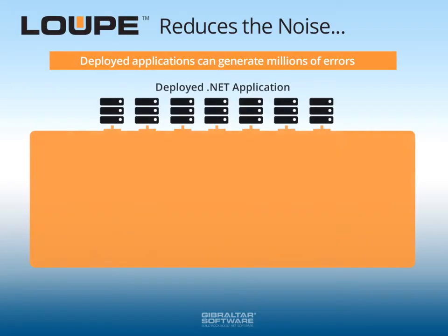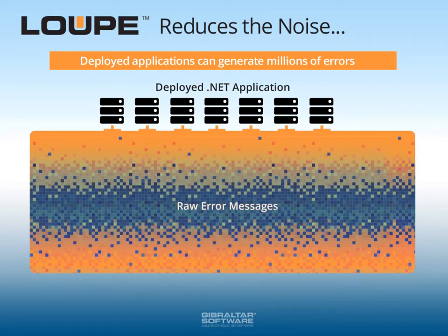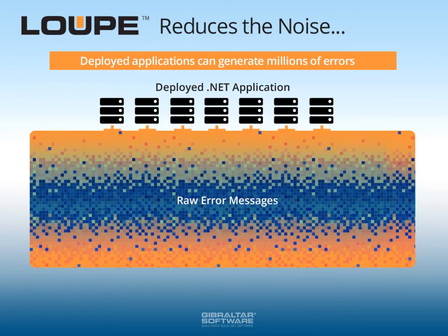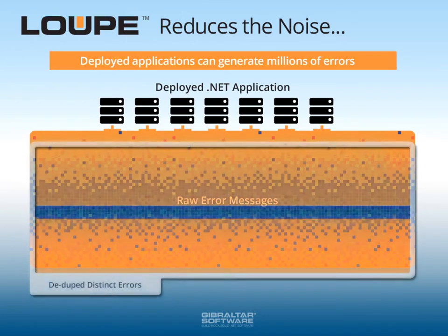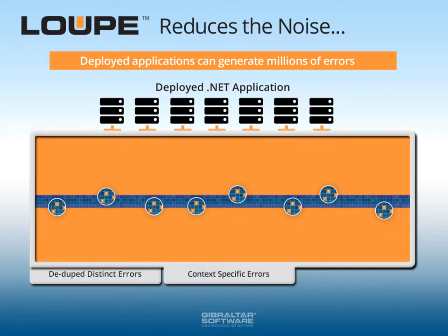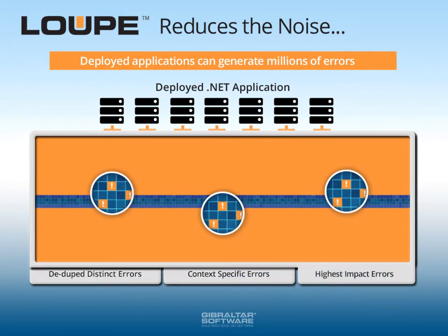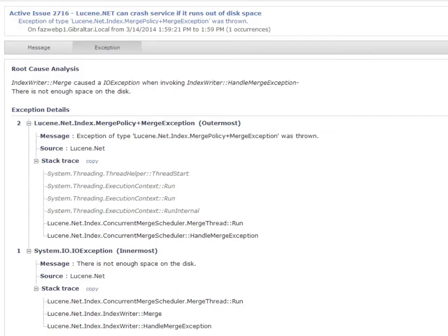Regardless of the size of your team or your user base, Loop analyzes every error, aggregating duplicates and filtering noise to identify the most important problems. Loop characterizes each error,